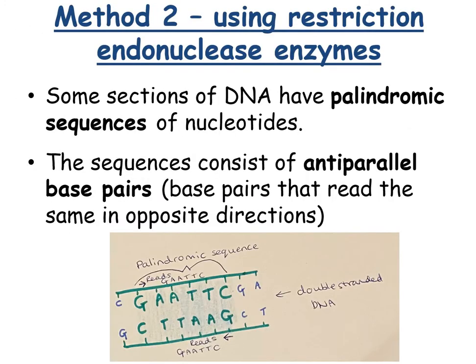The second method is using restriction endonuclease enzymes. Some sections of DNA have palindromic sequences of nucleotides — similar to how some names are palindromic, meaning they read the same forwards as backwards. For example, 'Hannah' reads the same in both directions. In DNA, palindromic sequences consist of anti-parallel base pairs that read the same in opposite directions.